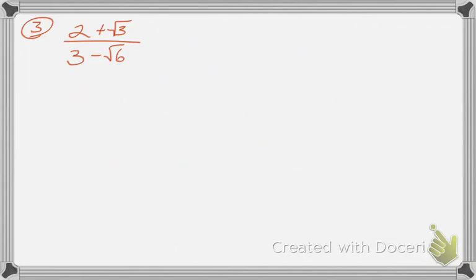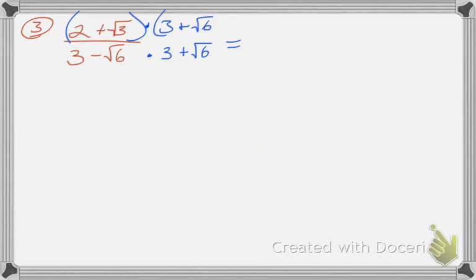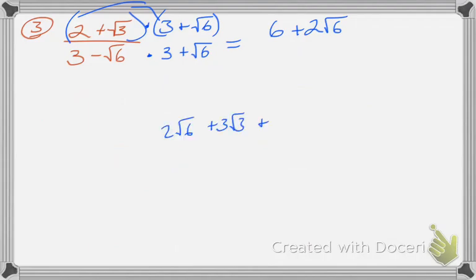I have one more example. Again, I have a radical in the denominator, so I need to rationalize this denominator. I'm going to multiply by its conjugate, which is 3 plus square root of 6. I'm going to change the numerator to 2 plus square root of 6 — everything else stays the same, just change that part.